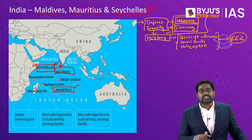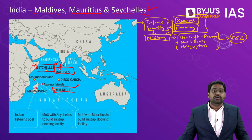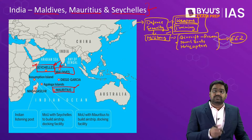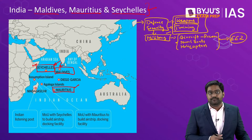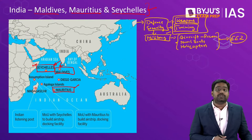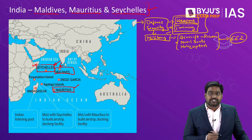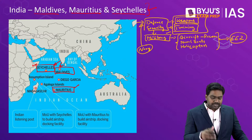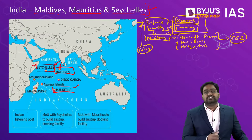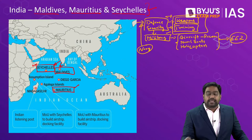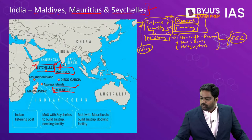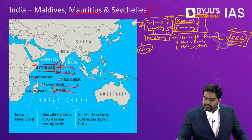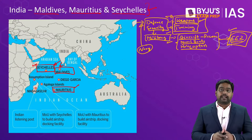All these small island nations have a significant EEZ in the Indian Ocean, whose economic resources and integrity are threatened by piracy, terrorism, and non-state actors operating in the region. To guarantee their maritime security, the Indian Navy is constantly deployed near these countries, conducting surveillance and reconnaissance missions across their exclusive economic zones. India has supplied weapons and military hardware including aircraft, helicopters, and naval boats to strengthen their maritime security.